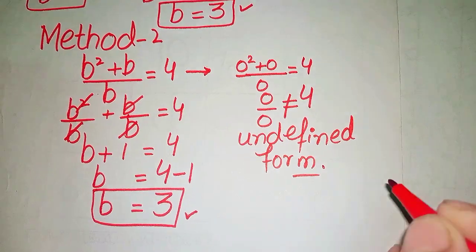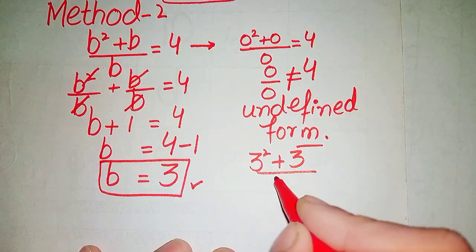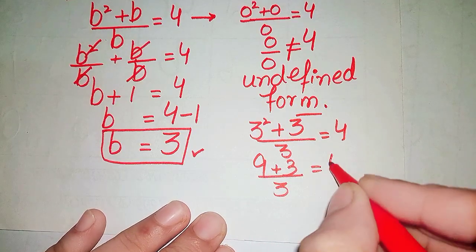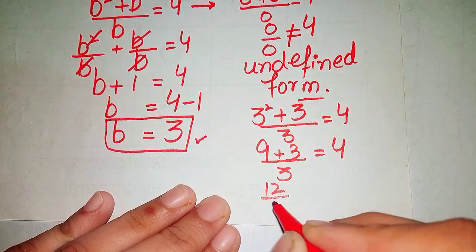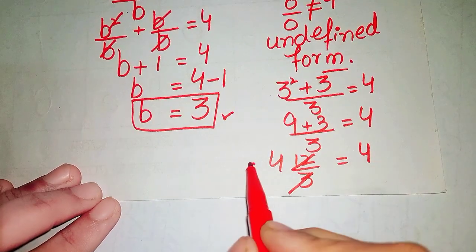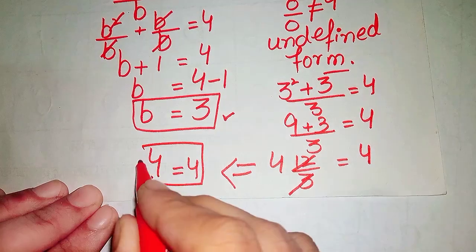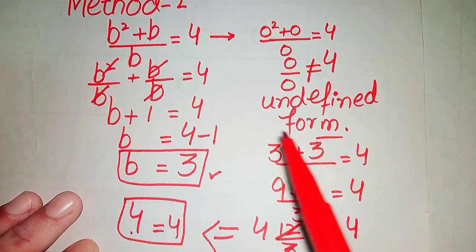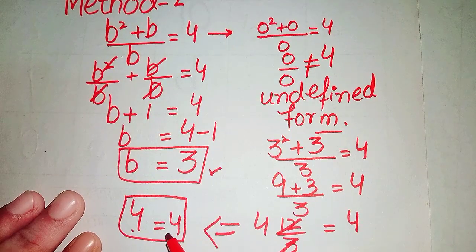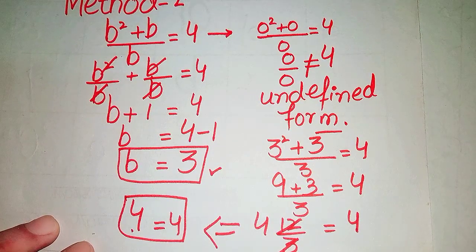Substituting b = 3: (3 squared + 3) / 3 = (9 + 3) / 3 = 12 / 3 = 4. Since 4 = 4, b = 3 verifies our equation and is the solution.